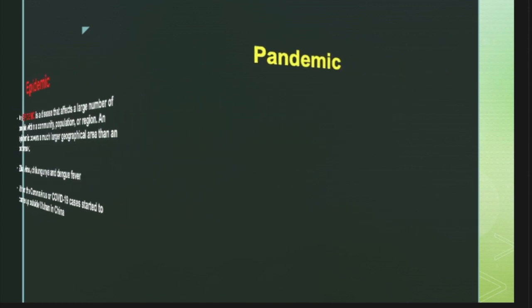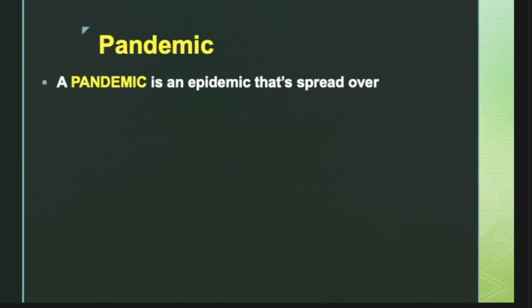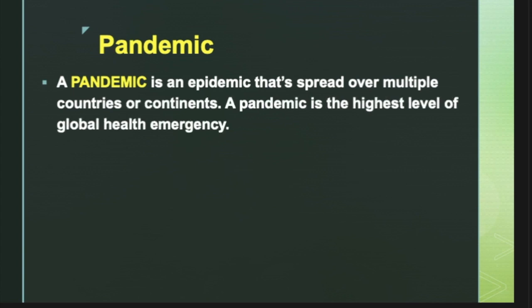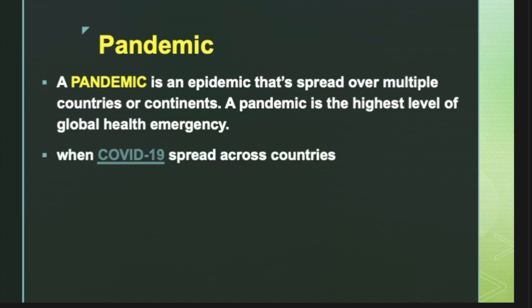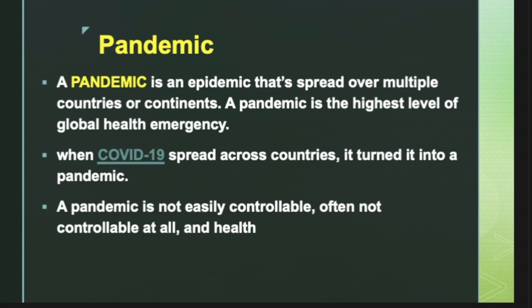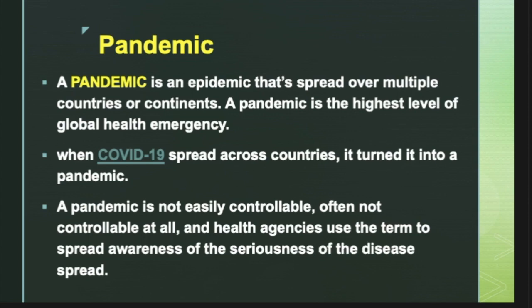Now let us look at what's a pandemic. A pandemic is an epidemic that has spread over multiple countries or continents — it's an epidemic that travels. Also, a pandemic is the highest level of global health emergency. When COVID-19 was limited to Wuhan, China, it was an epidemic, and the geographical spread turned it into a pandemic. The term pandemic has a connotation of fear; a pandemic is not easily controllable, often not controllable at all, and health agencies use the term to spread awareness of the seriousness of the disease spread.